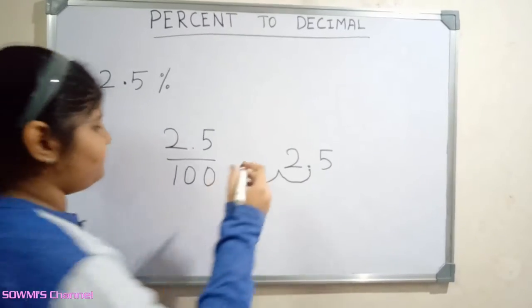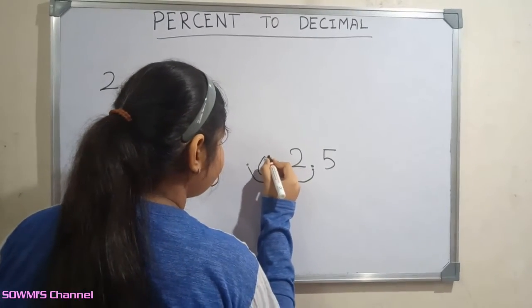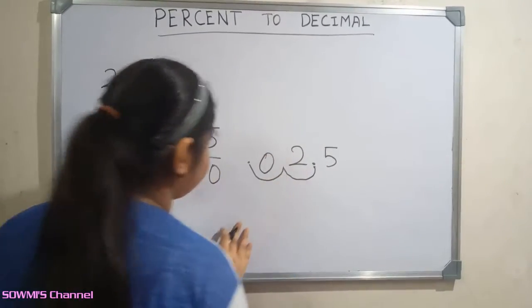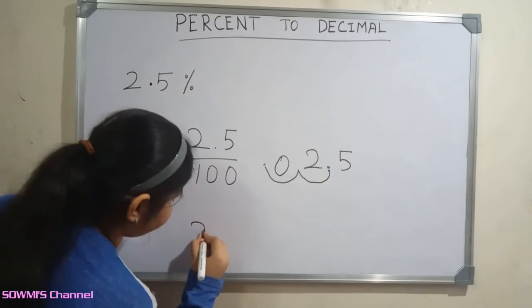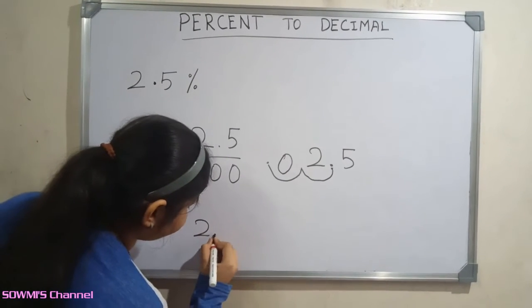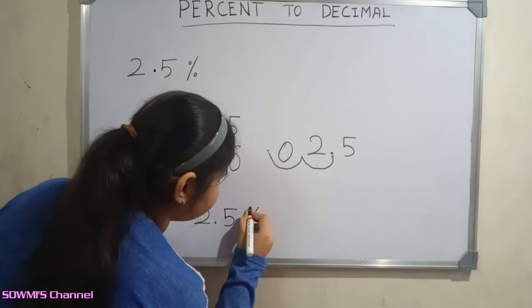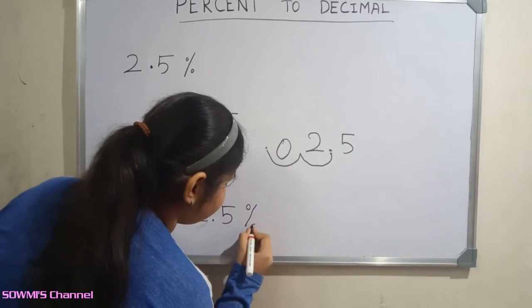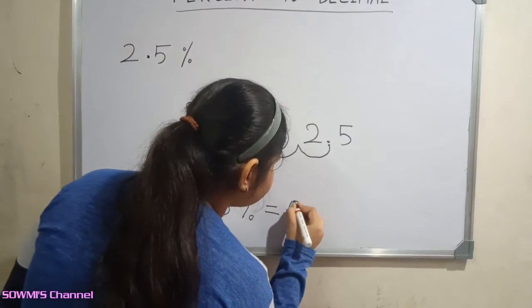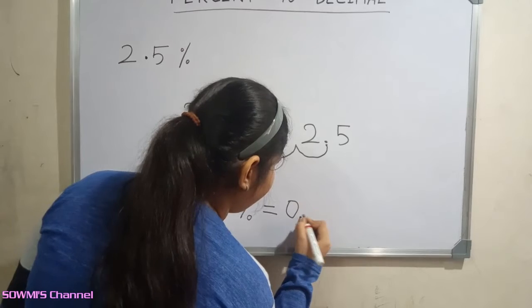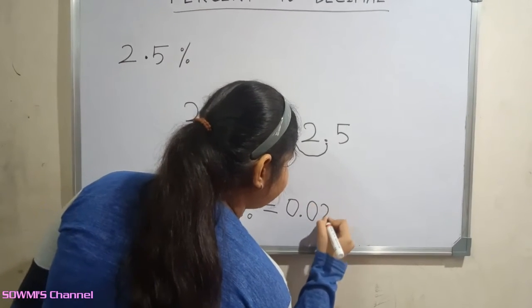Fill the extra spaces with zeros. So the answer is: two point five percentage is equal to zero point zero two five.